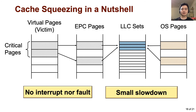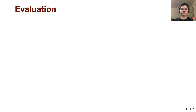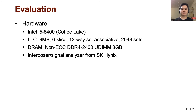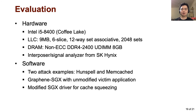The slowdown was usually indistinguishable from benign slowdown. We evaluated our attack on an Intel i5 processor with a 9 megabyte LLC using commodity DDR4 DRAM. To get the results, we collaborated with SK Hynix, but based on our survey, one can obtain the same devices for thousands of dollars per month. On the software side, we performed the attack on two unmodified applications — Hunspell and Memcached — running inside SGX using the Graphene Library OS. For cache squeezing, we modified the SGX driver to manage the memory mapping.